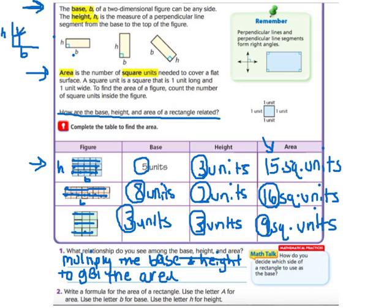And, number 2, write a formula for the area of a rectangle. Use the letter A for area, B for base, and H for height. So, I'm going to take this, and I'm going to show, using the letters, multiply base times height. They said B is for base, times H is for height. Will give us the area, which they said is an A. So, my formula for area is base times height. Area equals base times height.